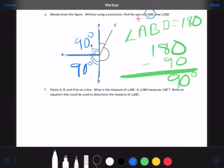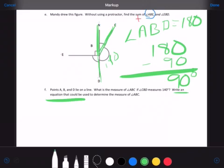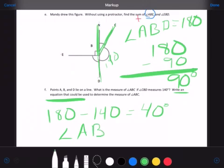F says, points A, B, and D lie on a line. What is the measure of angle ABC? So now I want to know the measure of angle ABC. So this acute angle there. What is the measure of angle ABC if angle CBD measures 140? So this part, CBD, measures 140. So I need to write an equation that could be used to determine that. So I would write 180 minus 140 as my equation, telling me I have 40 degrees left over. So angle ABC equals 40 degrees.